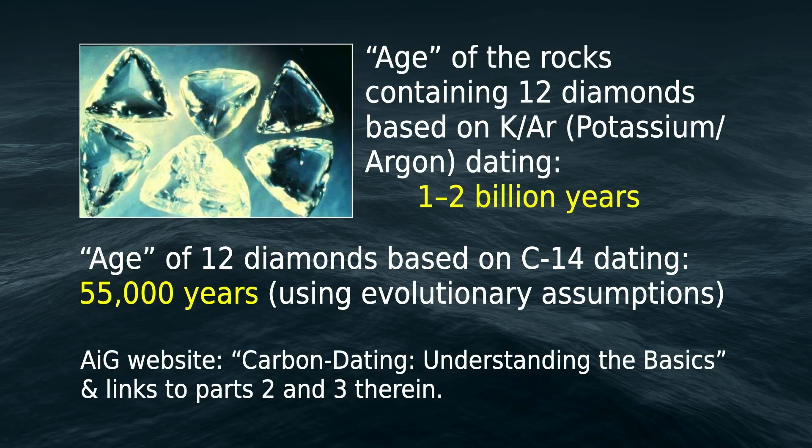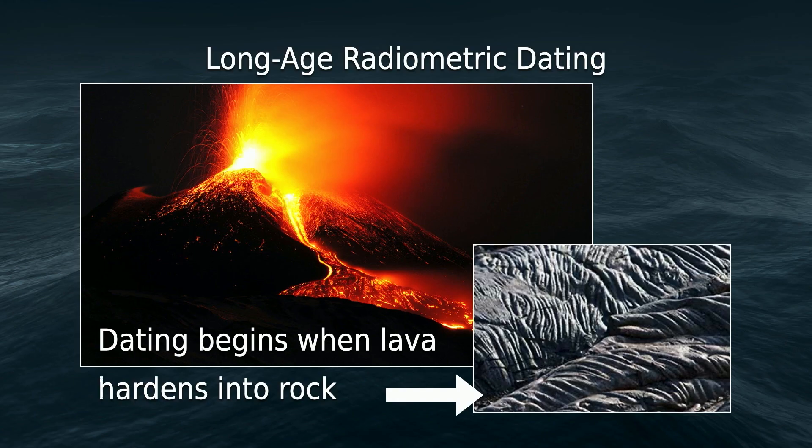You can read more about carbon dating in a three-part article by Dr. Andrew Snelling on our website. Now let's look at the long-age radiometric dating methods — uranium into lead, potassium into argon — those with half-lives in terms of billions of years. The dating clock begins when lava hardens into rock: the lava comes out of the ground with radioactive isotopes in it, hardens, and once the rock solidifies, the clock begins.